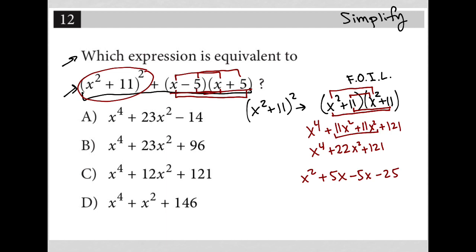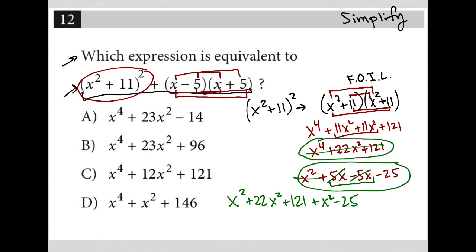So in this case, my 5x and negative 5x cancel out. So I just need to combine, basically, these two things together. And what I get is x to the fourth plus 22x squared plus 121 plus x squared minus 25. And that takes care of this part.